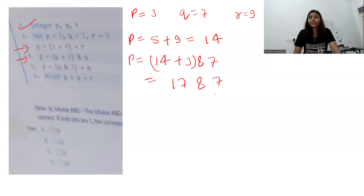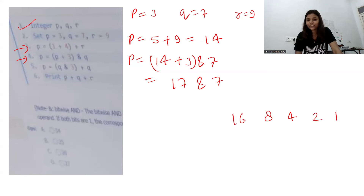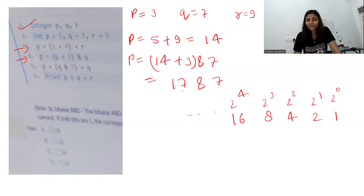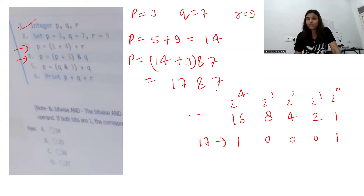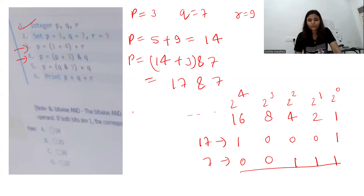In the next line we update p to p plus 3 plus q, so the latest p is 14, plus 3 is 17, and this is bitwise AND with q which is 7. We need to convert them into binary. Using the 8-4-2-1 place values, for 17 we also need 16. So 16 plus 1 gives 17, binary is 1 0 0 0 1. For 7, 4 plus 2 plus 1 gives binary 0 0 1 1 1.